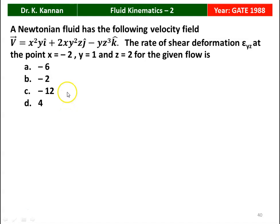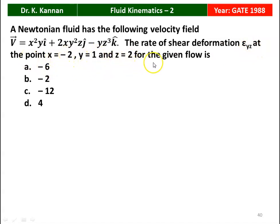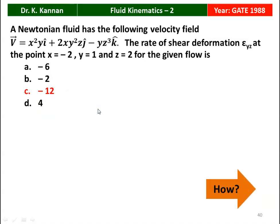Next question from the 1988 Question Paper: a Newtonian fluid has velocity field b⃗ = x²y î + 2xy²z ĵ − yz³ k̂. Find the rate of shear deformation ε_yz at point (x, y, z) = (−2, 1, 2). Options: −6, −2, −12, and 4. The correct answer is −12.